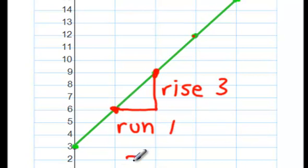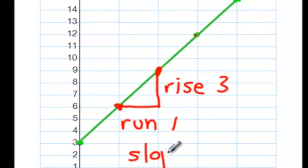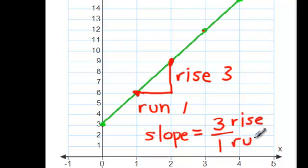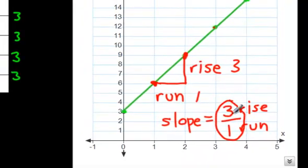So, therefore, the slope of this line is three over one. You write the rise on top. You write the run on the bottom. And that is called the slope. By the way, three divided by one is just three. So, what's the slope of this line? Three.